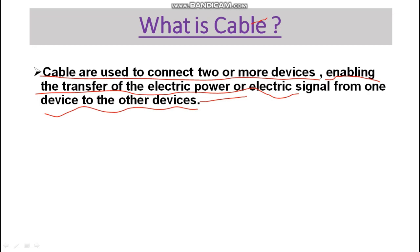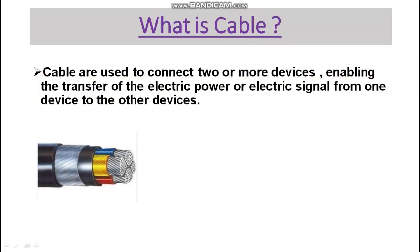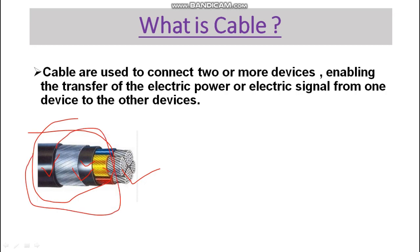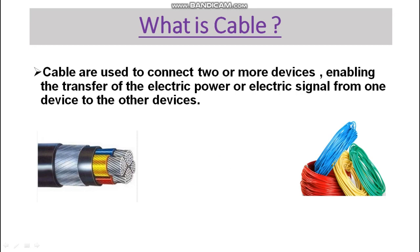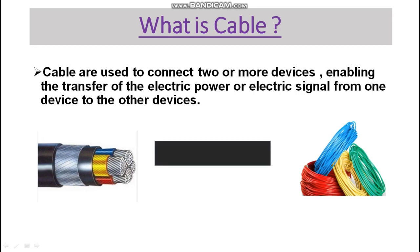It is a medium to transfer the power from source to device. As you can see over here, this is the view of a cable — this is a power cable, four core, where we have PVC insulation, armor, and then again insulation. These are the sheaths we can say. This is the armored cable.